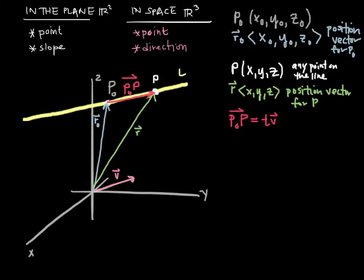This is a really interesting result, because using this really nice diagram, we actually found that we can construct the position vector for any point on the line by taking the position vector of the known point on the line and adding on an appropriate scalar multiple of v. Let's write that explicitly.